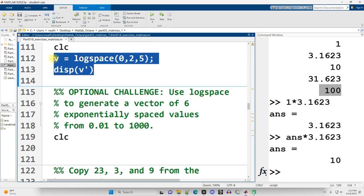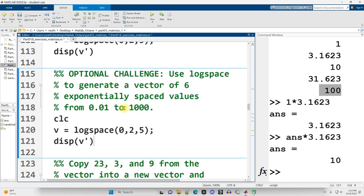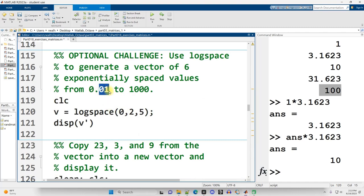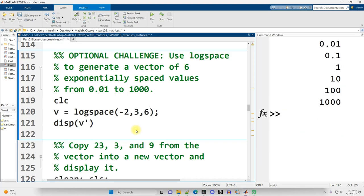Use log space to generate a vector of six exponentially spaced values from 0.01 to 1,000. All right, so very similar. So I'm just going to go ahead and copy and paste. But then I want to start at 0.01. 10 to what power is 0.01? Well, it's actually negative 2. And then 10 to what power is 1,000? Well, that's 3. And then I want six total values. And there we go.